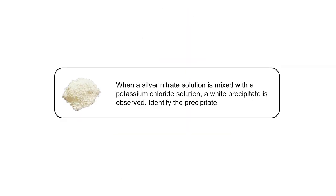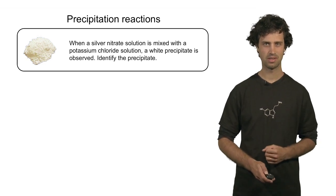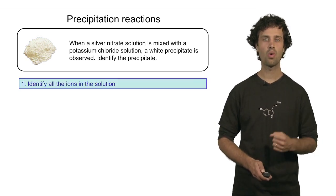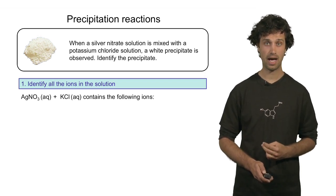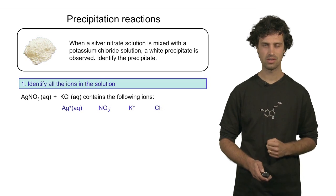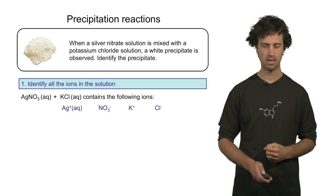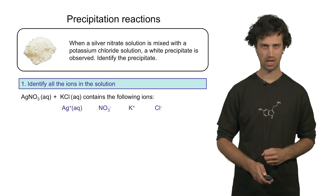Let's look at another example. In this example, we combine two solutions once again. The first solution is silver nitrate. The second solution is potassium chloride. After mixing these two, we find a white precipitate. Let's try to find out what this precipitate is. We proceed along the same lines. The first step is to identify all the ions in solution. These two starting materials produce the following ions: silver ions, nitrate anions, potassium ions, and chloride anions.